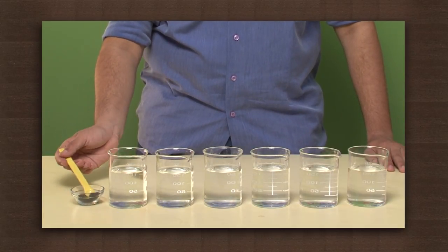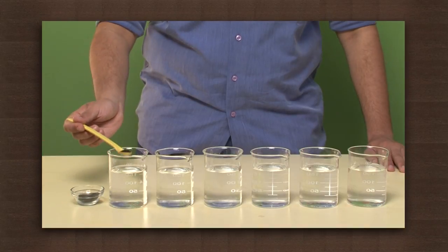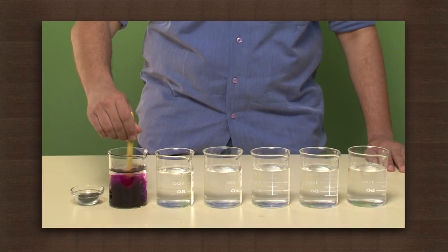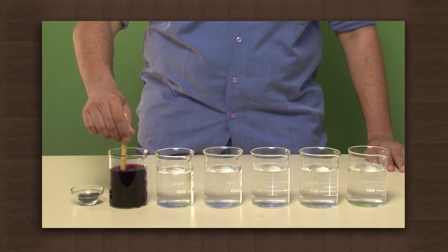Add a few crystals of potassium permanganate in the first glass. Stir it well. We can see that potassium permanganate has given color to the water.